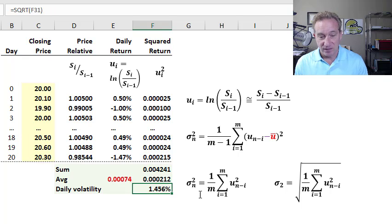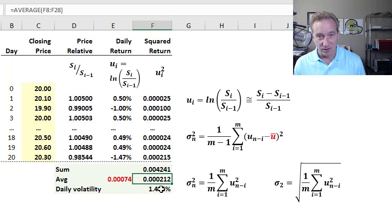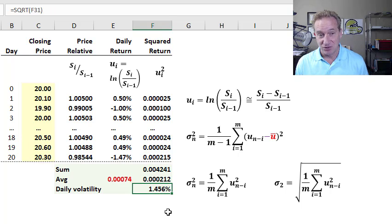All we need to do is take the square root of it, because this is a variance rate. And the variance, of course, is not really necessarily intuitive to us. But the volatility, or standard deviation, is. So we take the square root of that average squared return, and we get, in this case, the daily volatility. So I've switched back to percentages here. And in this case, it's 1.456% square root of the average squared return. And it's represented over here.